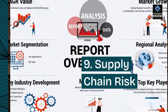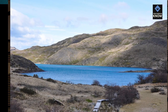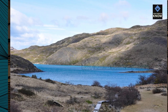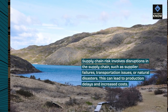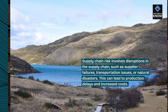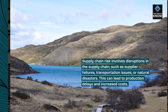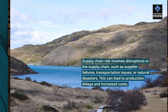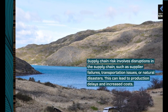9. Supply Chain Risk. Supply Chain Risk involves disruptions in the supply chain, such as supplier failures, transportation issues, or natural disasters. This can lead to production delays and increased costs.